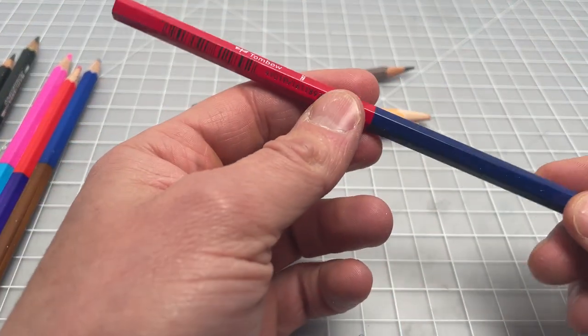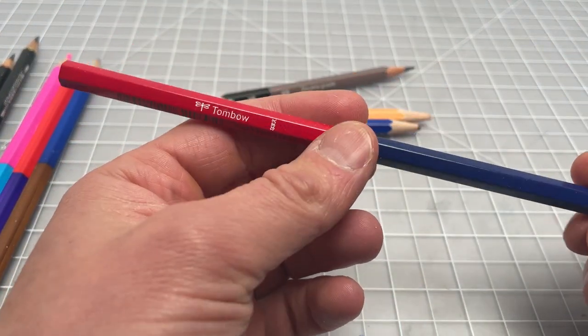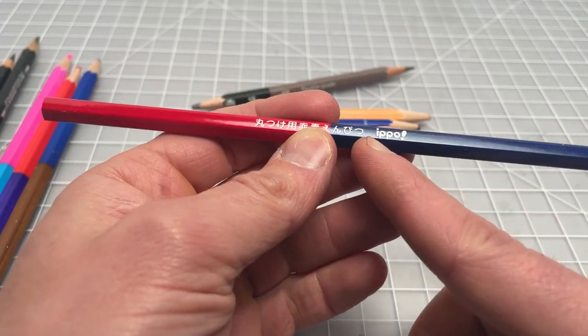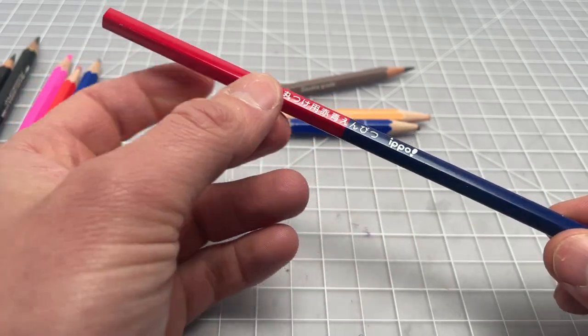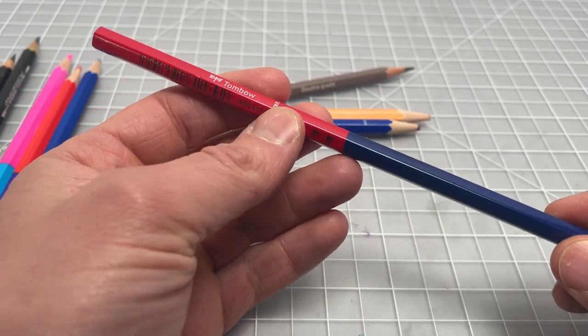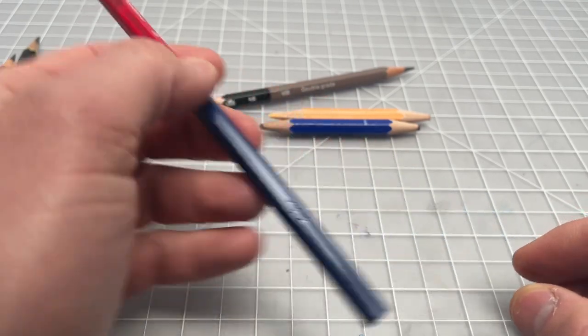Go through some more varieties. Again, this is the Tombow. You see the red and the blue. This is part of the IPPO, I don't know if that's IPPO or what. And that's just their line of double-sided colored pencils. Pretty cool. These are very high quality. The Tombow and the Caran d'Ache are both excellent.